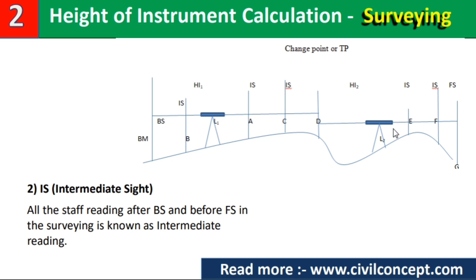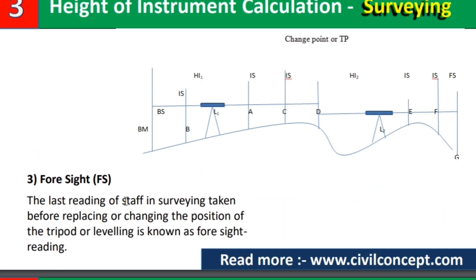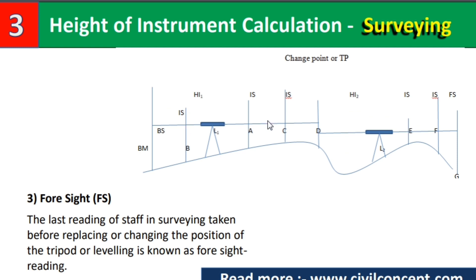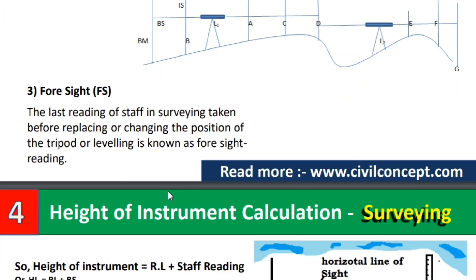When we change the level from one position to another, that new first reading is our backsight and the last point is our foresight. Foresight reading is the last reading of the staff in surveying, taken before replacing or changing the position of the tripod or leveling machine. So: first reading = backsight, middle readings = intermediate sight, last reading = foresight.